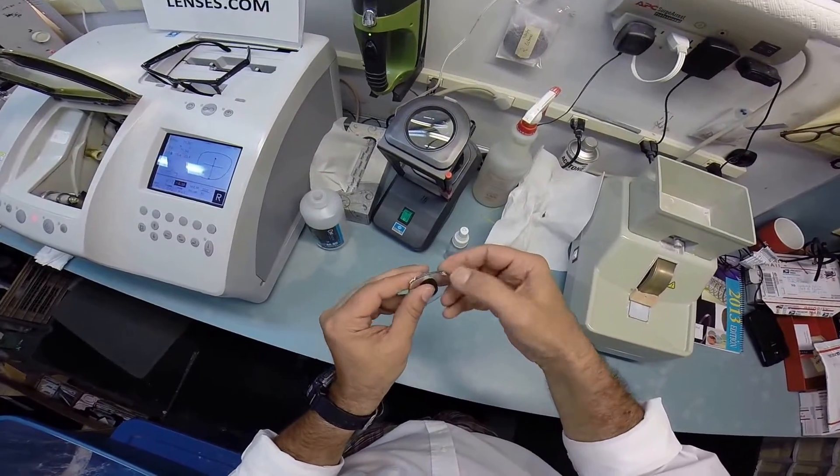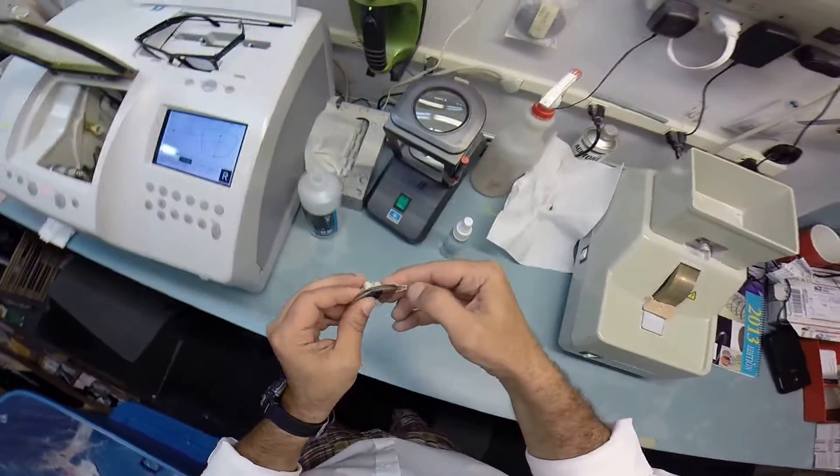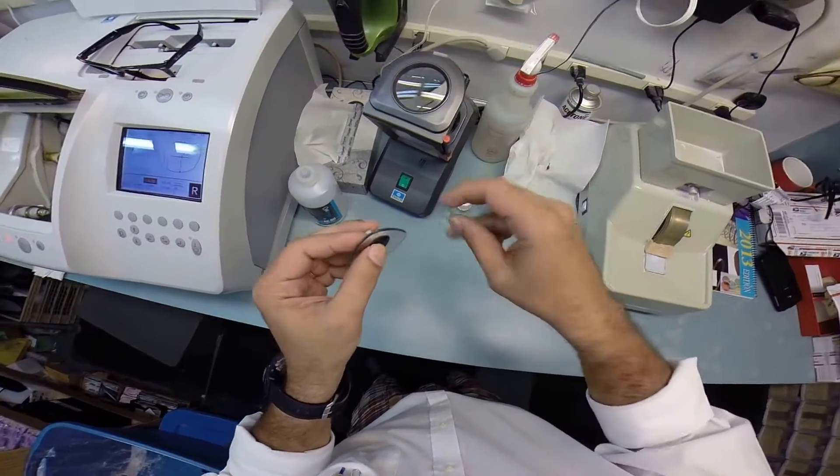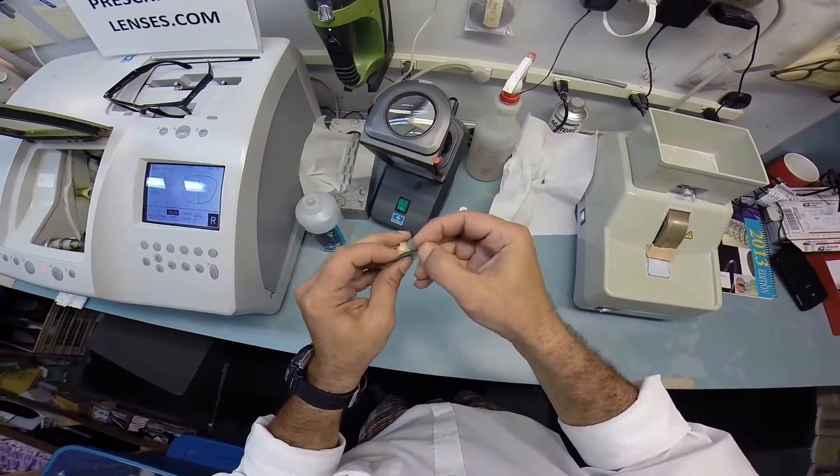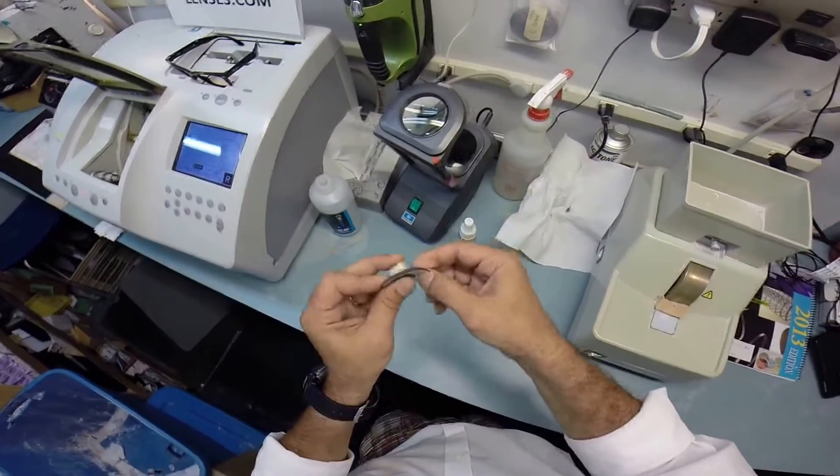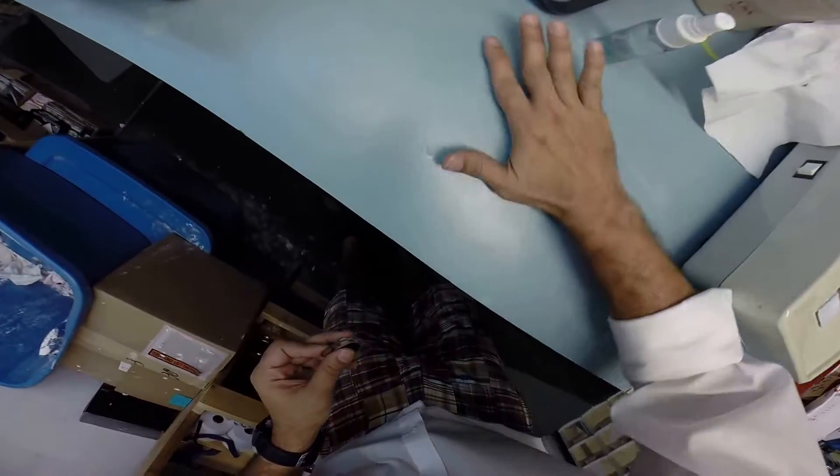This white powdery substance that you just never see in Florida and is on the edge of this lens is called schwarf. I use my thumbnail to scrape it off the edge of your lens. I do it so much I've worn a bevel into my thumbnail. Once it's all off of your lens and onto the counter, I carefully collect it into one pile and then I wipe it on the floor.